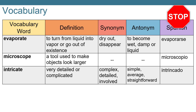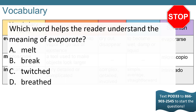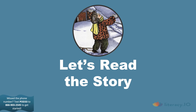Pause your videos. It's time to kick off your questions. Text POD33 to 866-903-2545 to get started. Which word helps the reader understand the meaning of evaporate? Which word is a synonym for intricate? A. Simple. B. Average. C. Complex. D. Disappear. Alright, detectives, let's read the story. Hope you enjoy reading Snowflake Bentley.